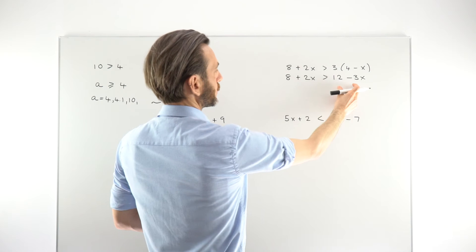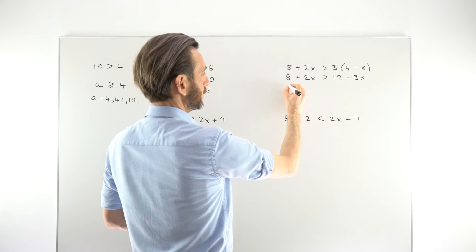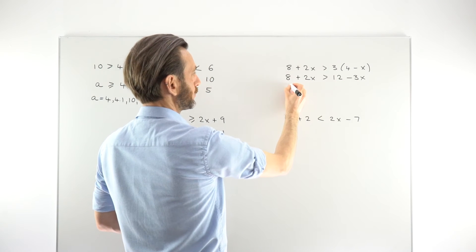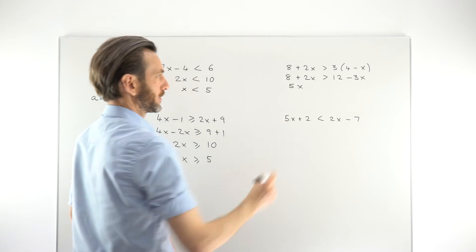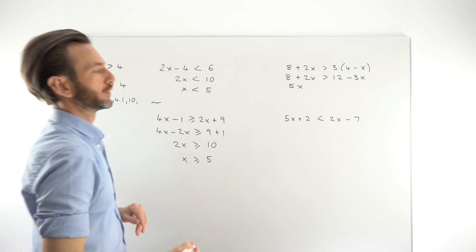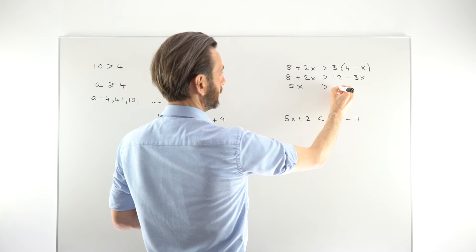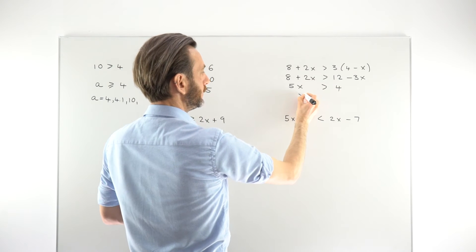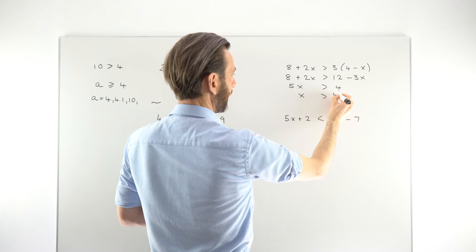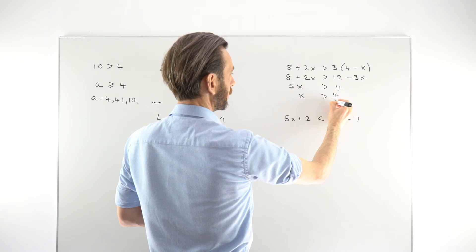Just gathering all the terms, maybe the x's on the left, the numbers on the right. So if we take the 3x over to the left, we're going to get 2x plus 3x to give us 5x, combining those into one line of working. Taking the 8 to the other side, 12 minus 8 is 4. Dividing both sides by 5, and we get x is greater than 4 over 5.